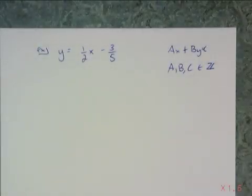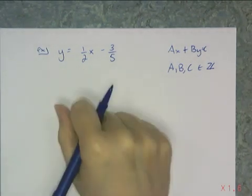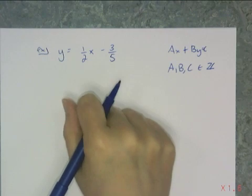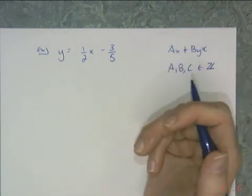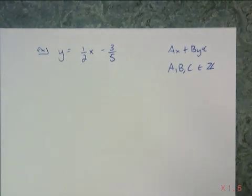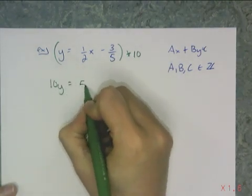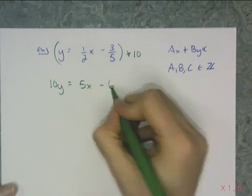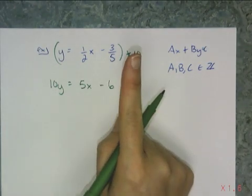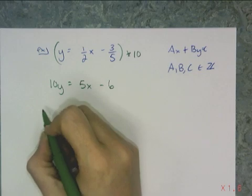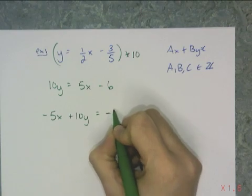When there are two different kinds of fractions — say a half and a fifth — do the same thing: multiply by something to get rid of both fractions. Pick something that eliminates a denominator of 2 and a denominator of 5, so multiply both sides by 10. That gives 10y equals 5x minus 6. Now move the 5x over — x comes first — so subtract 5x from both sides, giving negative 5x plus 10y equals negative 6. That's standard form.